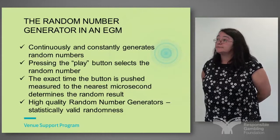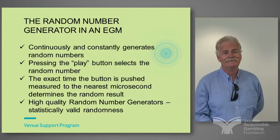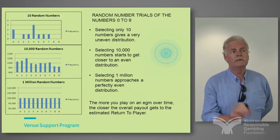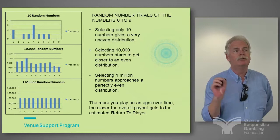One of the good things about that is that even a technician can't go back and find out what the next random number to be generated is. Random numbers are often difficult to explain, but if you use the example of ten balls in a barrel numbered zero to nine — you pluck one out and put it back, pluck another one out and put it back — with only ten draws you'd find an uneven distribution.